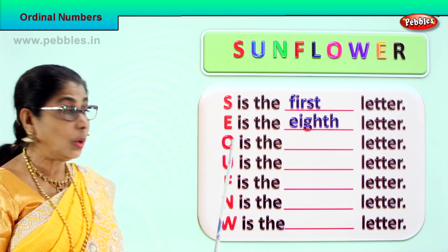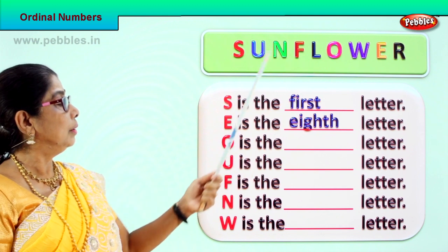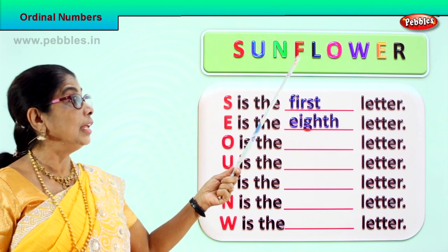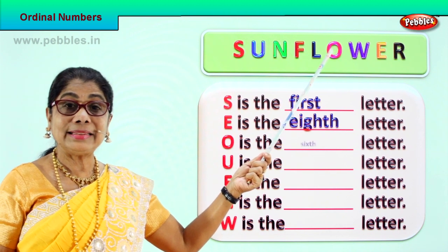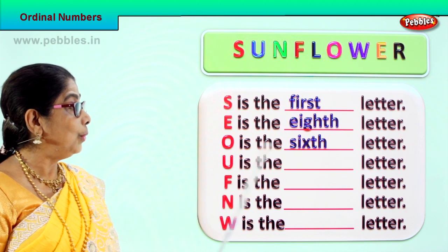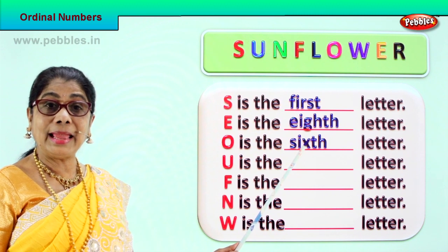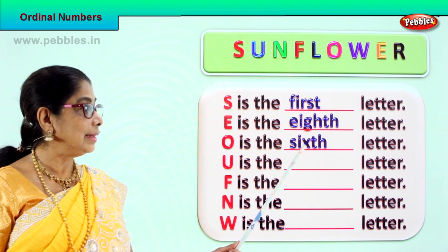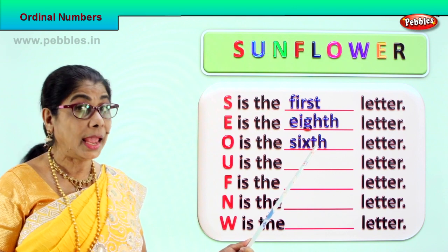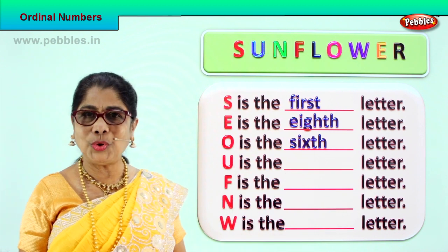What about letter O? Letter O is in what position according to the ordinal number? Where is O? First, second, third, fourth, fifth, sixth. The letter O in sunflower — O is the sixth letter, sixth position. Let's spell the ordinal number: S-I-X-T-H, sixth. O is the sixth letter.